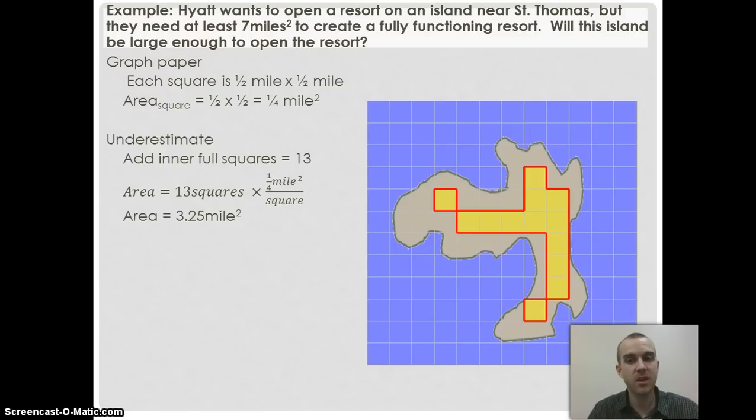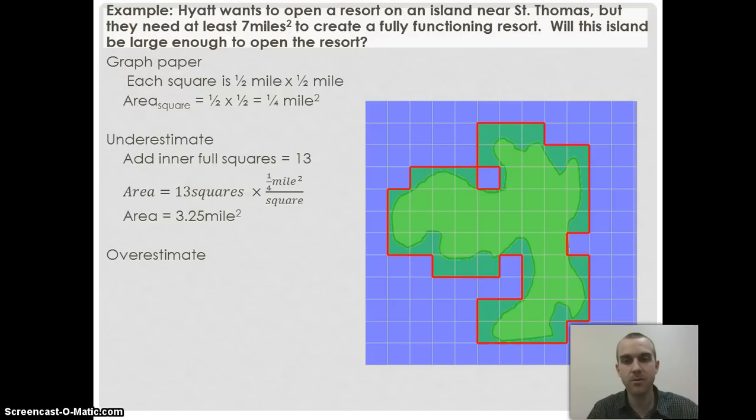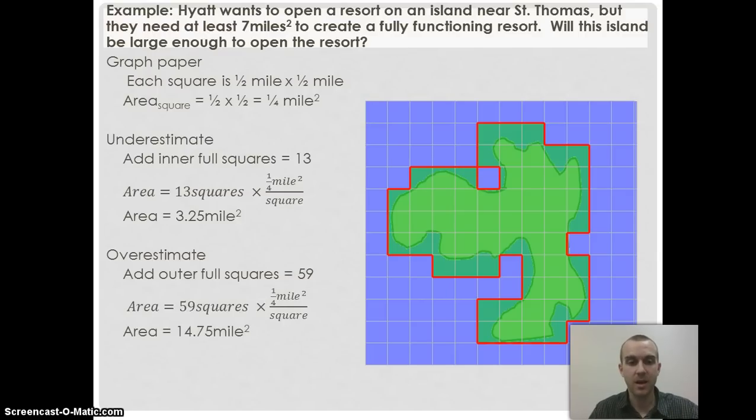I'll do the same thing with the overestimate. I'll cover everything I can, but if there's any area with no shape in it, I won't count it. That's why this one's blue and these have curves around here. When I count all those squares, I get about 59 squares. I'll take my 59 and multiply it by one-fourth of a square mile because that's what each square is worth. That gives me 14.75 square miles.